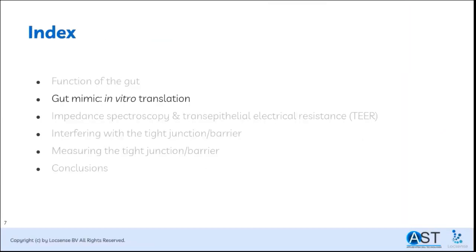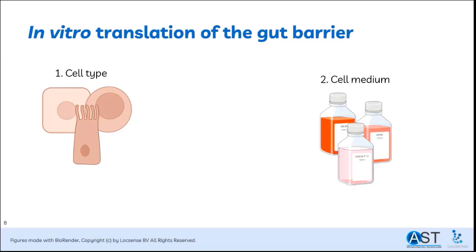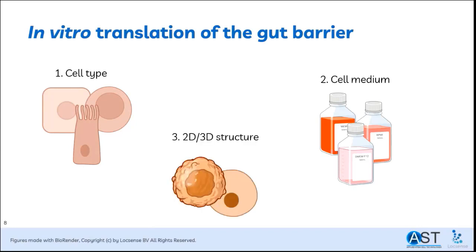This brings us to the in-vitro translation of the gut. During this webinar, we are going to discuss three factors that influence this mimic: first, the cell type — which cells are used in the gut mimic, and how many different cells; second, the optimal culture medium, including necessary supplements; and lastly, 2D or 3D structures to make an in-vivo-like situation.